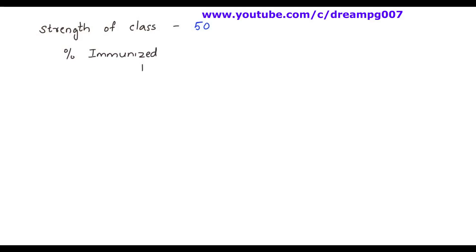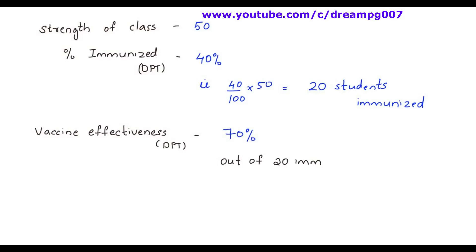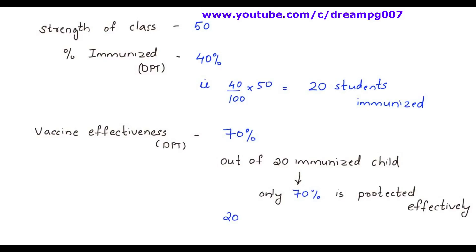Let's have a look at the data given in the above question. Strength of class is 50. Percentage of children immunized with the DPT is 40%, which means about 20 students are immunized. The DPT vaccine effectiveness is 70%, that is, out of 20 students, 70% are protected, which comes to about 14 students.